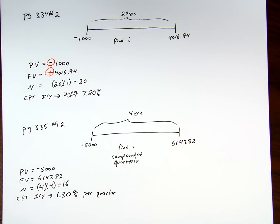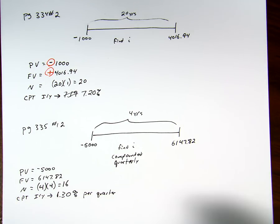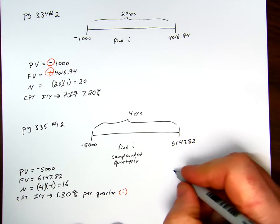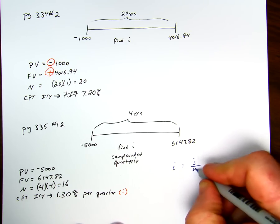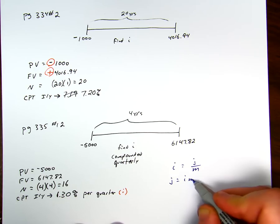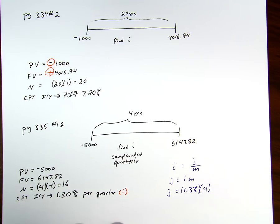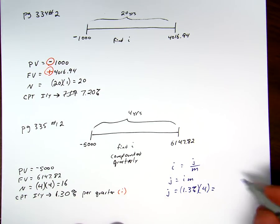What we're looking for in the question is the nominal annual rate after compounding. So the result that we get out of this is i. And what we're looking for is j. And we know we had our formula that said i is equal to j over m. Solving for j, we say j is equal to i m. So j is equal to our 1.3% times our compounding per year, 4, 5.2%.